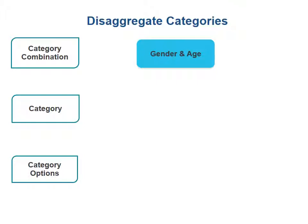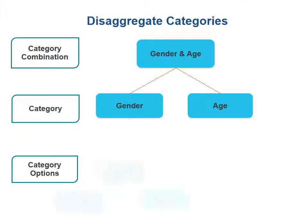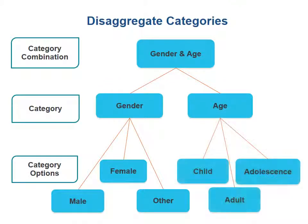So this would be, for example, if we wanted to track how many students were coming to class — instead of saying 15 students came to class, we could say how many students came to class that were of a specific gender and of a specific age. We have two categories, gender and age, that combine into that combination, and each of those categories has three options: male, female, other for gender, and child, adult, and adolescent for age. Each of these categories could be their own category combination, but we've combined them to show how you can do this in DHIS2.